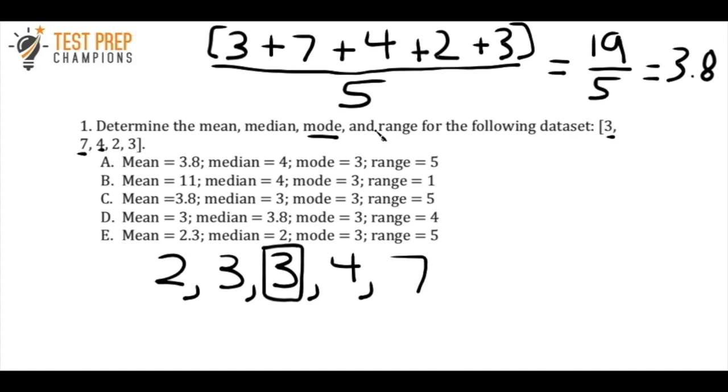Now the range is probably the simplest one to calculate. For the range, all you're going to do is you take the biggest number in the data set, and the biggest number here is 7, and you're going to take the smallest number, which is 2, and you just subtract them. So 7 minus 2 gives us 5. All right, and so the correct answer here is C.